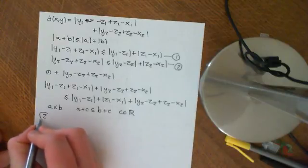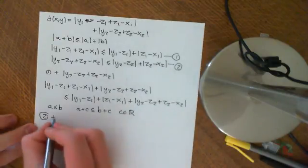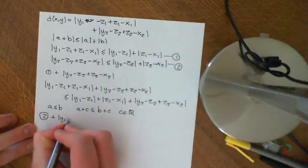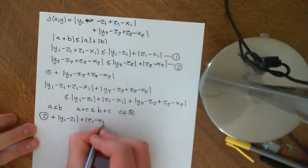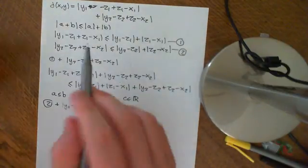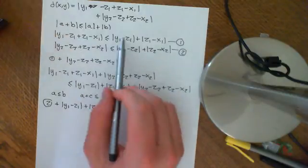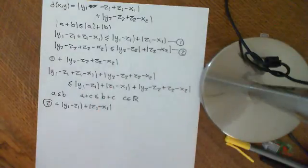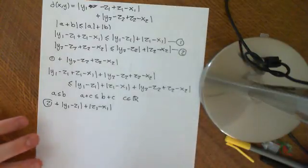Now I take inequality 2 and I add on, what am I going to add on? I add on y1 minus z1 plus z1 minus x1. Now you might say, what a kerfuffle, why are you going for all of this? All you needed to do was say that it's obvious that the sum of these two is going to be less than or equal to the sum of these two. But I'm just going to show you rigorously why that is true, using the axioms of the ordered field of real numbers.